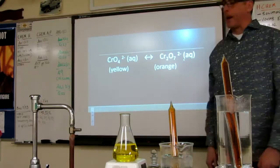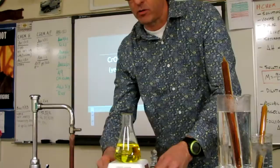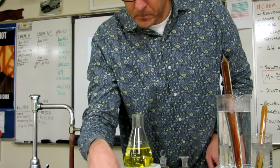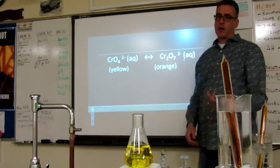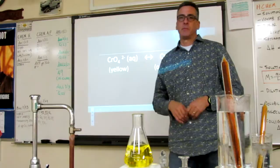Okay, the next quick demo, let's put this away, is between dichromate and chromate ion. Let me turn my stirrer on. And the chromate ion is a yellow color. The dichromate ion is an orange color. And right now, it's at equilibrium. I'm not going to mess with the temperature this time.